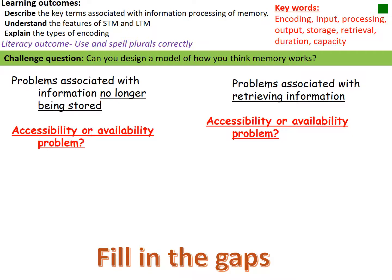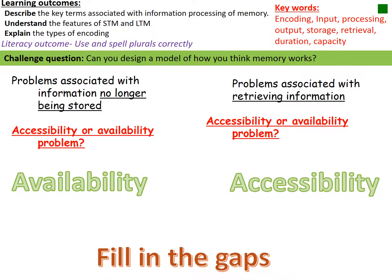When information is no longer available to you, it's not stored anymore. For example, if a teacher says they told you something last week and you genuinely don't know the answer, that information isn't available to you — it may have been forgotten or mislaid. Whereas if you know you know it but can't bring it to the front of your mind, you're having a problem with accessibility.